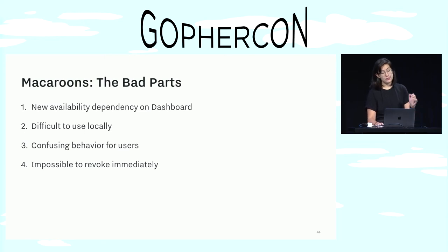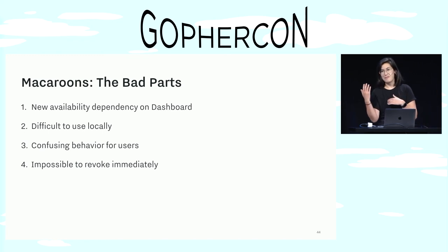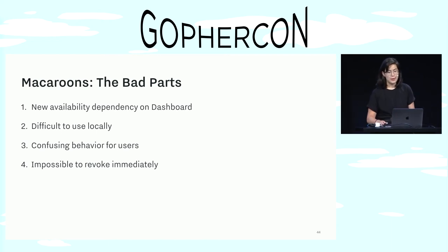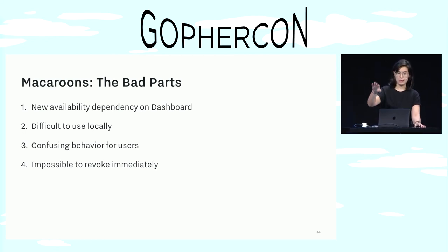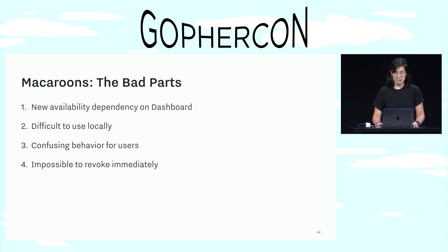On a similar note, revoking a credential took up to five minutes. If we wanted to revoke a macaroon, we'd need to tell Dashboard to stop issuing discharge macaroons. But any given discharge macaroon was valid for five minutes and we couldn't claw it back once it had been issued. We ultimately solved this problem by making each request check in with Dashboard, so each request would have to go to Dashboard to make sure the discharge macaroon hadn't been revoked. But this defeated the whole point of using macaroons. Revocation is really hard, and macaroons did not make it any easier.